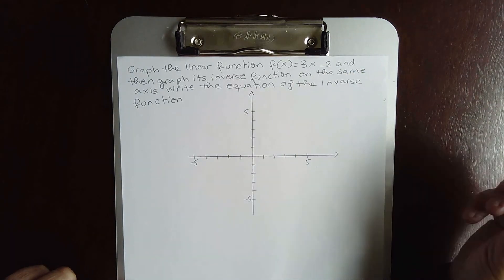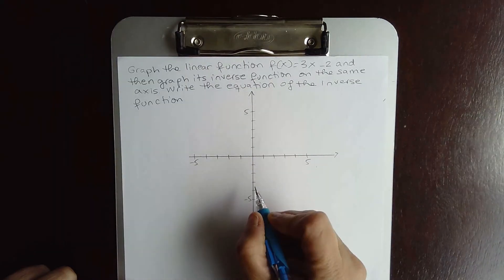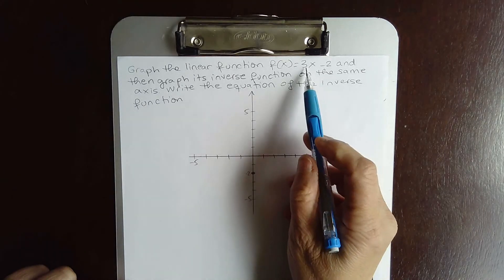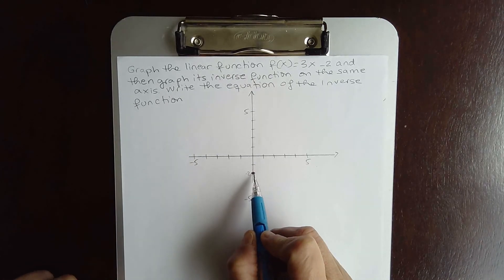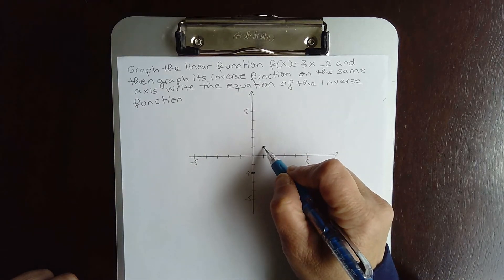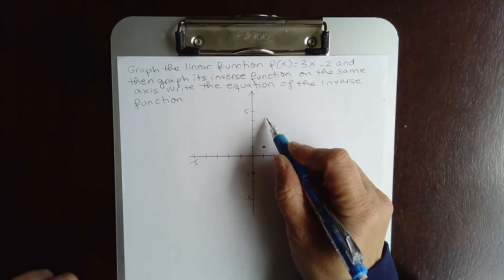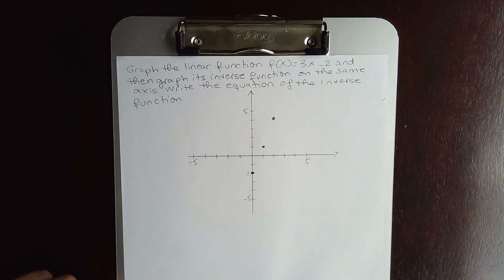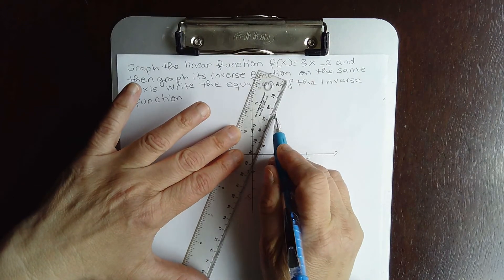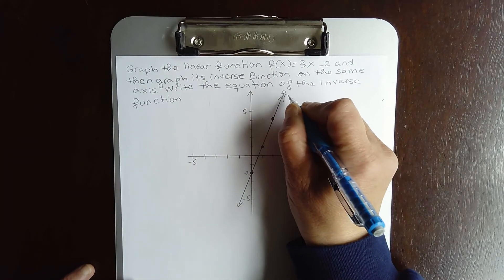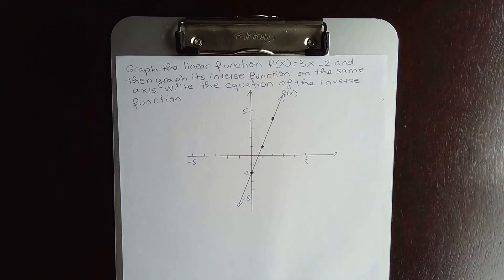The y-intercept is at (0, -2), so we plot that point. The slope is 3 over 1, so the rise is 3 and the run is 1. We go up 3 and over 1 to get the next points, then connect the dots to graph the line. This is the graph of f of x.